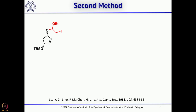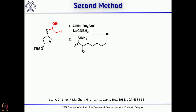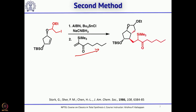He also attempted the same sequence by a second method where the acceptor is different. He took the radical precursor and used the same conditions, except the acceptor was an alpha-beta unsaturated ketone. Earlier, he had used tertiary butyl isocyanide to introduce the cyanide and then obtained the aldehyde by reduction. Now he wanted to directly trap the radical with this alpha-beta unsaturated ketone — and he could successfully do so.